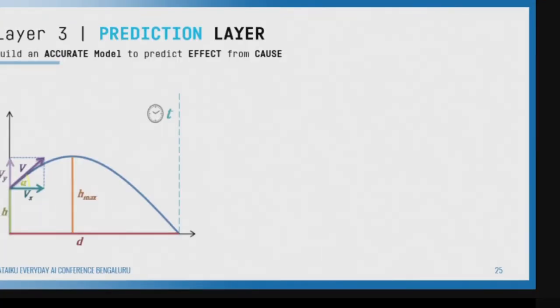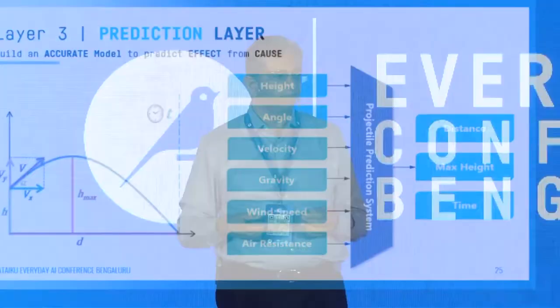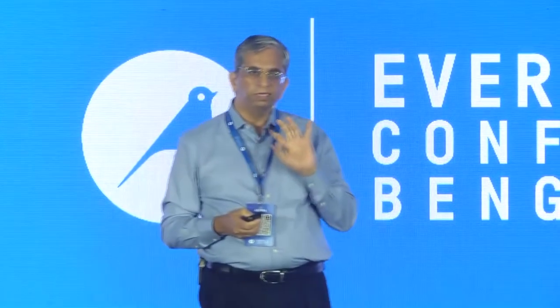Once you know causality, now we'll do prediction. The prediction is about taking the causal variables and the effect variable — this is the input, this is the output. Can I quantify how much of this leads to how much of that? With a lot of data, we can build prediction models. I'll talk about four things: what is the prediction framework in general, and why do companies do prediction? There are only three reasons.